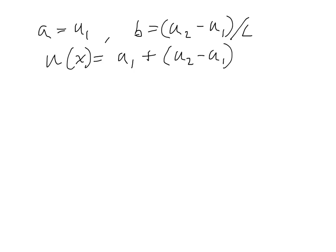Let's rearrange those two terms to get a and b, the two unknowns in our equation for u, defined in terms of u1 and u2. So a is just u1, that's obvious. b is equal to (u2 minus u1) divided by l. So we plug this into the u of x expression and we find that u of x is equal to u1 plus the quantity (u2 minus u1) times x over l.